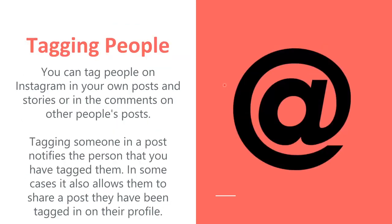Tagging people is helpful when you create a post and you want to include another person who was involved in the photo, for example, and you want them to be able to see it. You tag them by typing @ before their profile name, and you can easily search for them as well.